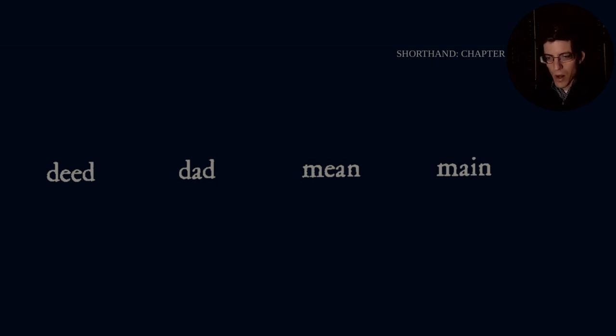So deed. Remember, we're working with vowels that are in the same direction. And then a stroke underneath because it's a long sound. And then dad. Notice no stroke because it's the short sound of the A group. Mean, stroke because it is the long sound for E. And then finally, main. Main receives a stroke because it's the long sound as well.